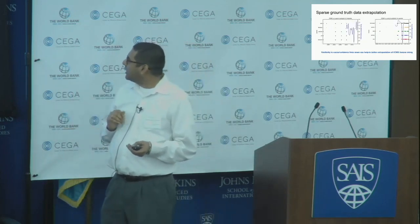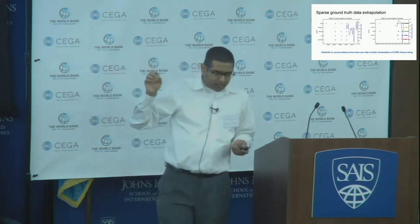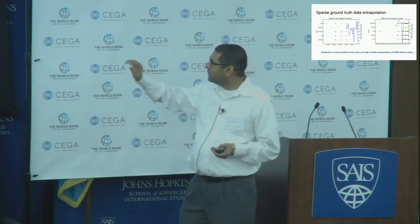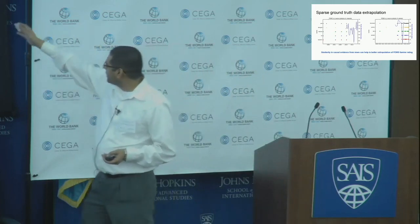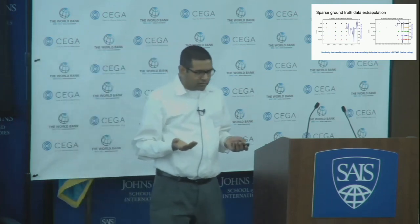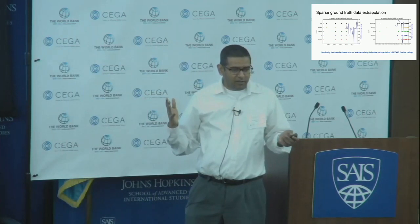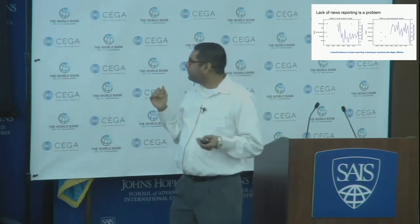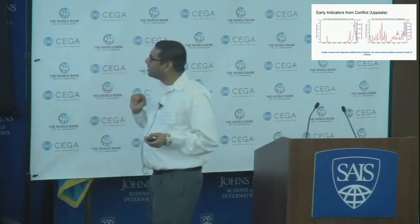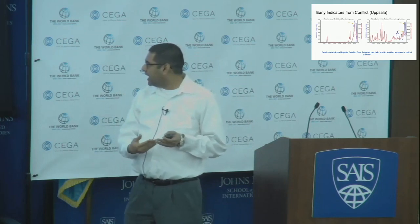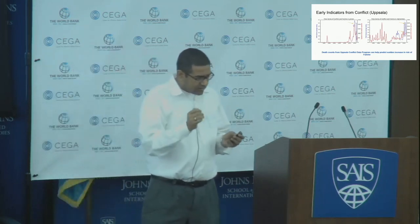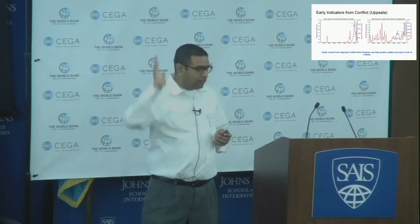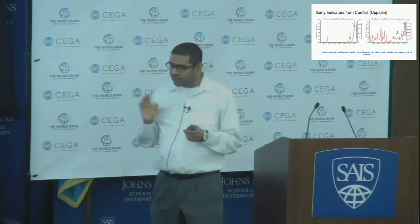Building upon this even further: one thing to note is that the data can be really sparse for specific countries. In Rwanda and Yemen, we had very little data going before. In Yemen, until 2015 there was almost no data, and suddenly after 2015 the number of articles talking about this exploded. Apart from this data, you can also take additional data like the Uppsala conflict data. We were able to find that death counts as published by Uppsala has an interesting signal to predict the upswing of famine, and we've been able to find that across a few countries.